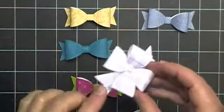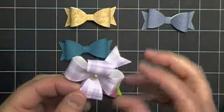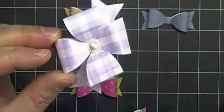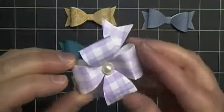Also, you can do two of the loopy bows and put them together with one of the tails as I've done here. I went ahead and added a Recollections Pearl just right in the center.